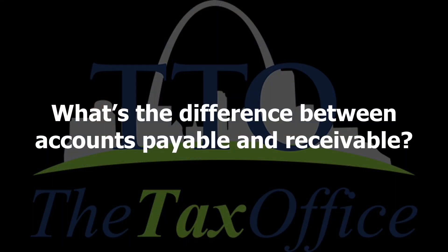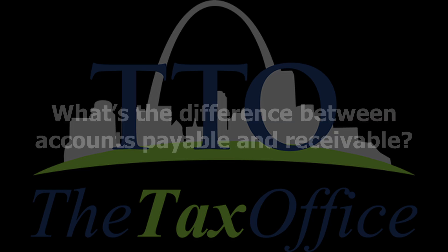Tips from TTO with your tax man Greg. What's the difference between accounts payable and receivable? Simply put, accounts receivable is billing you've done and you're waiting on the money — you're waiting to receive this money.